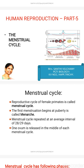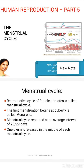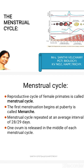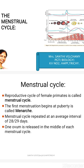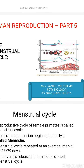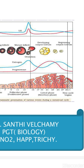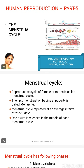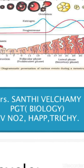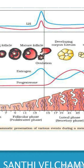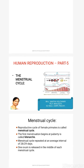The menstrual cycle is the reproductive cycle of female primates. The first menstruation begins at puberty, which is called Menarche. The menstrual cycle is repeated at an average interval of 28 to 29 days, and one ovum is released at the middle of each menstrual cycle — that is called ovulation.